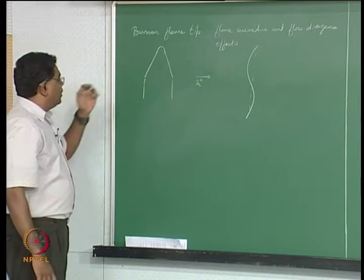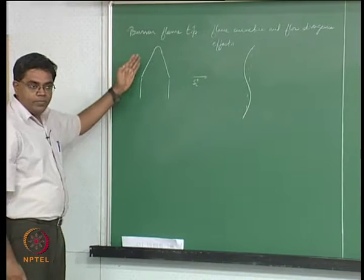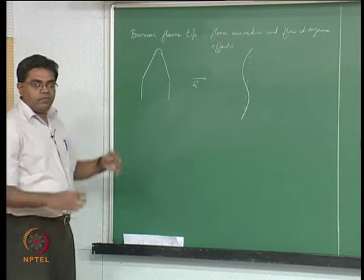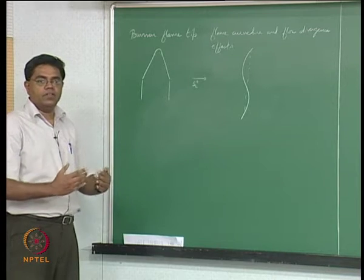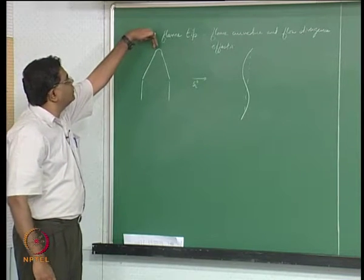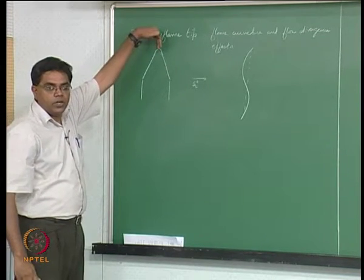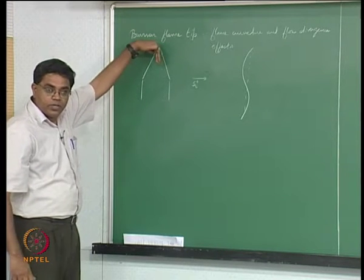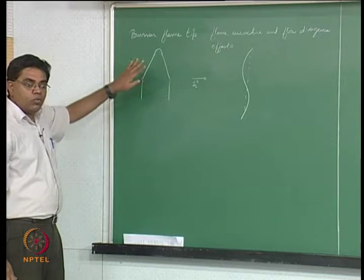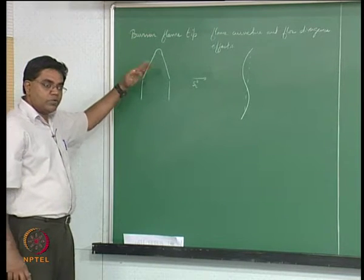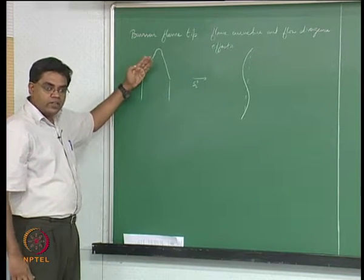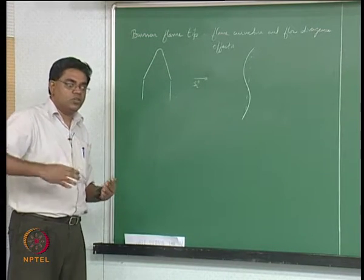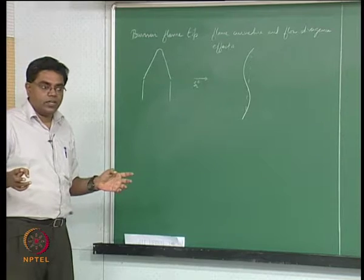That is true for most of the shoulder of the flame, but if you think about what happens at the tip, no matter what the flame speed-flow velocity balance is, the tip always has to propagate against the flow directly. So no matter what the flow speed is and how the flame speed can balance it, the tip always has to adjust itself to match the flow speed to the extent it can.